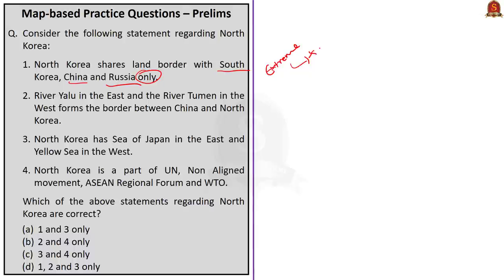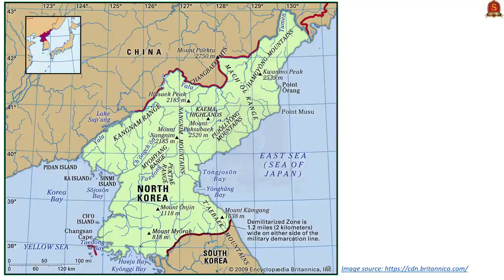But in this case, if you look at the map, North Korea actually has boundary with only three countries — South Korea on the south, and China and Russia on the north. I deliberately added the 'only' part just to make you know that not all extreme statements are wrong.